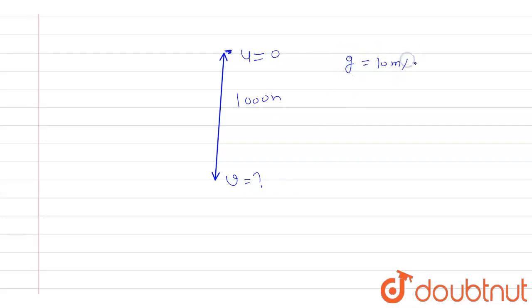So what we do now, we will apply the third equation of motion and g can be taken as 10 meter per second square. So the third equation of motion we can say that v square minus u square is equal to 2gh.